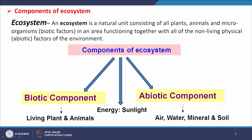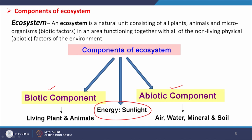Now, components of ecosystem — just like components of environment, the functional components are also the components of the ecosystem. We can identify the biotic component, the abiotic component, and sunlight — the energy — which is very, very important, as we have already discussed. Biotic components include plants and animals, and abiotic components are air, water, minerals, and soil.